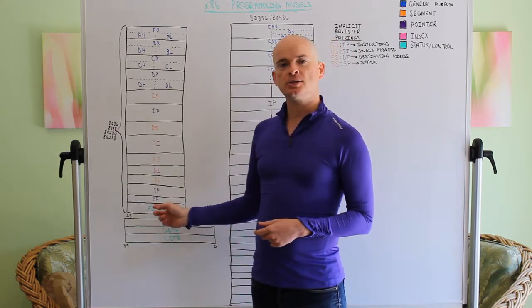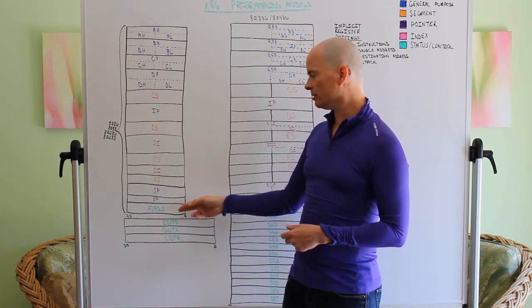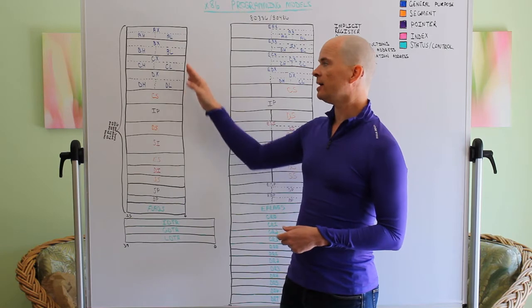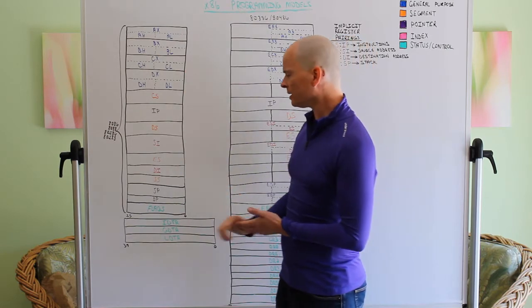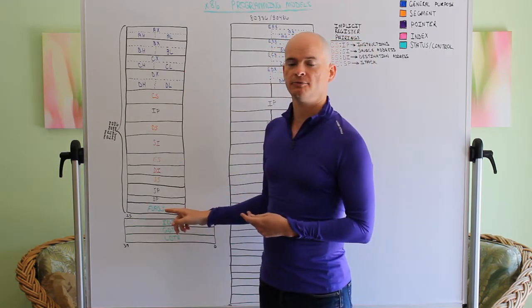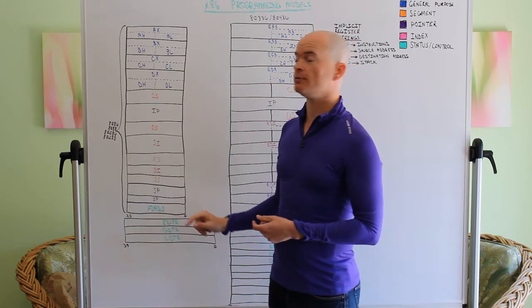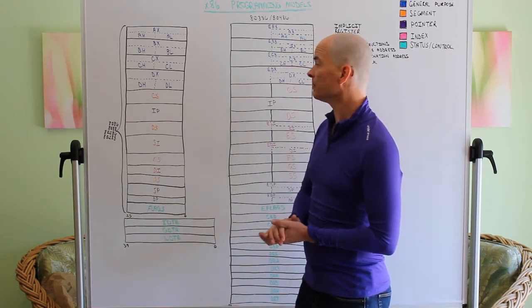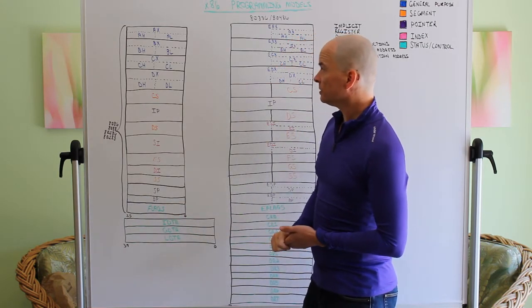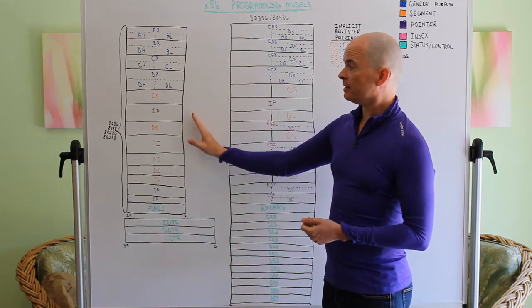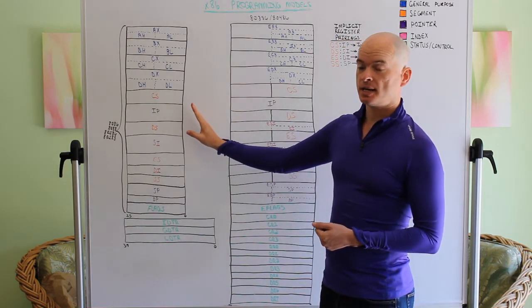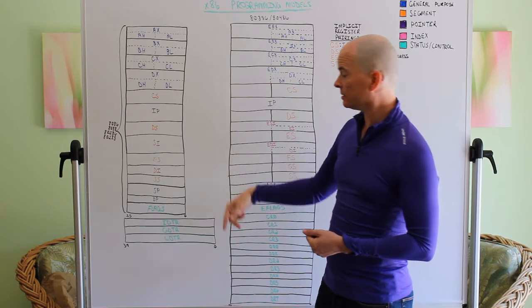Now we have a flags register down here, this is our status control register, the only one that we have in the 8086. This contains our arithmetic flags as well as system control flags and status flags. So that's basically the 8086 through the 8186.